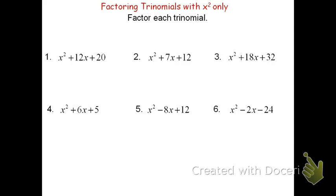For problem number one, we need to find two factors that multiply to be 20 and add to be 12. I begin by trying different ways to make 20 by multiplication: 20 could be 1 times 20, 2 times 10, or 5 times 4. I need to figure out which adds to be 12. 1 times 20 would add to be 21 — that won't work. 4 times 5 would only add to be 9 — that won't work either. Therefore, the factors I want are 10 and 2. Since it's a 1x squared, the factored form is the quantity x plus 10 times the quantity x plus 2. You can also reverse it to the quantity x plus 2 times the quantity x plus 10.